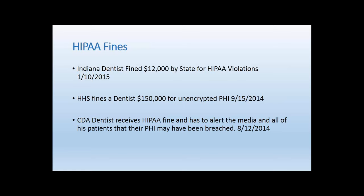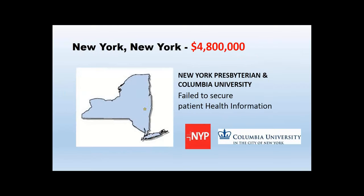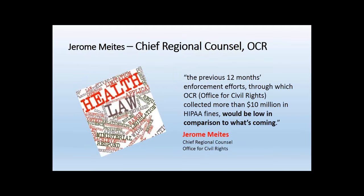A California dentist breached over 500 records. The law states that when you have a breach of 500 or more, you have to publish that in the public record — in the newspaper — letting patients know their records were breached. We're seeing this in various areas. Adult Pediatric Dermatology was fined $150,000 for not securing their email, and Columbia Presbyterian was fined $4.8 million for failing to secure patient health information.